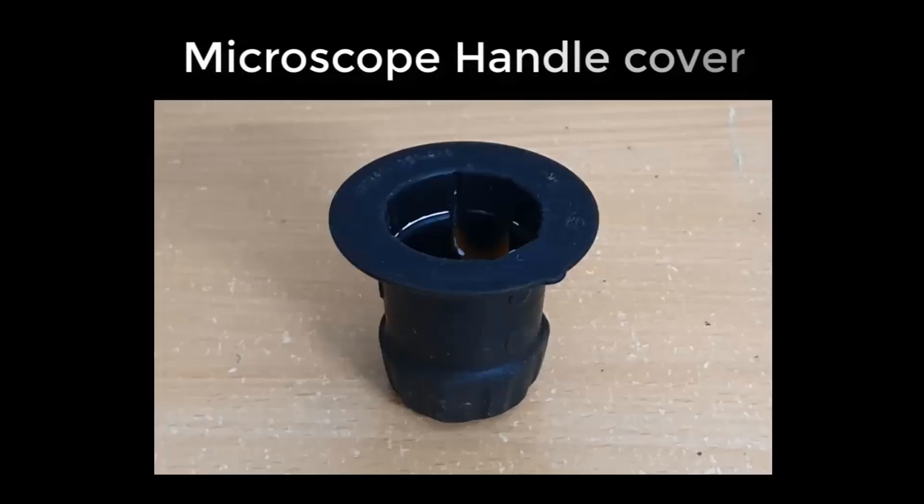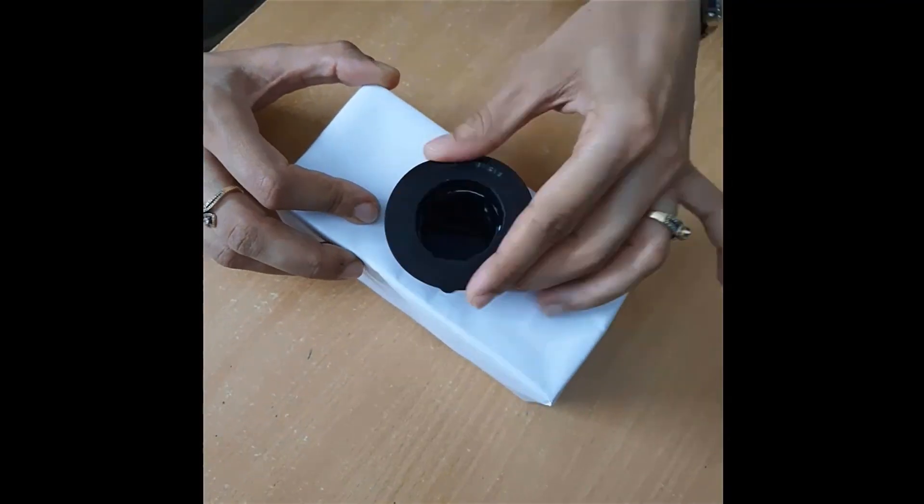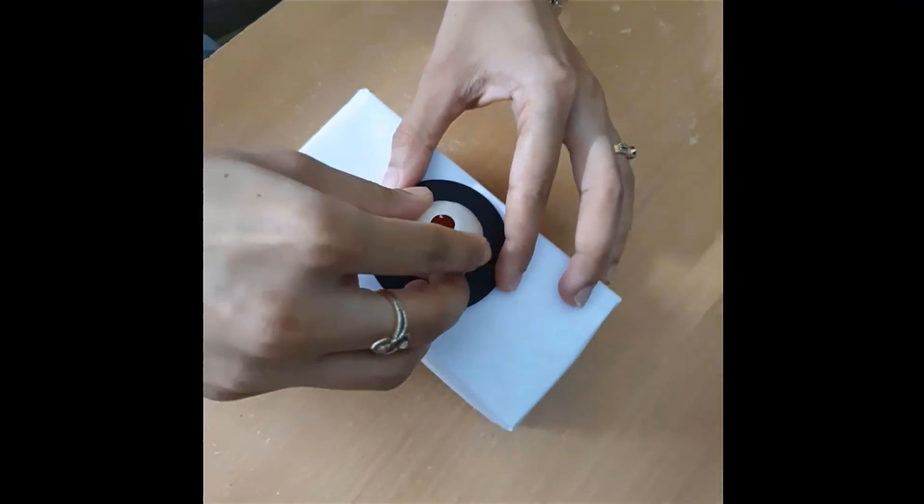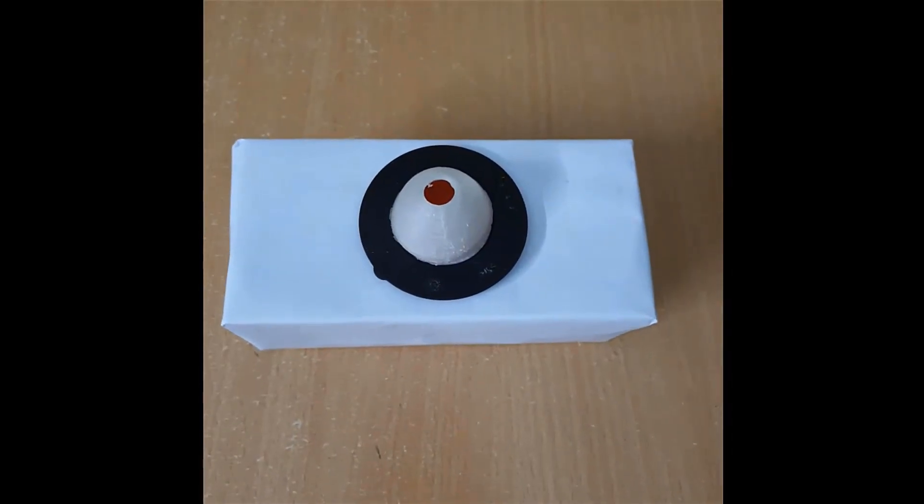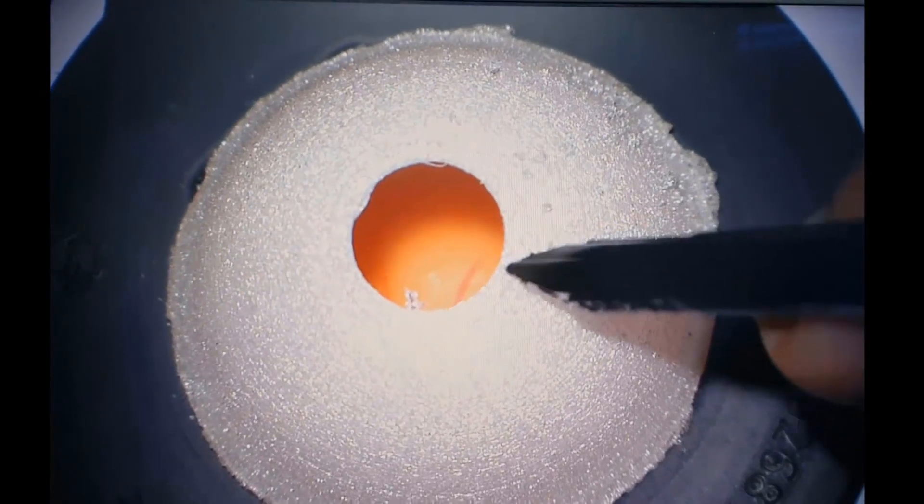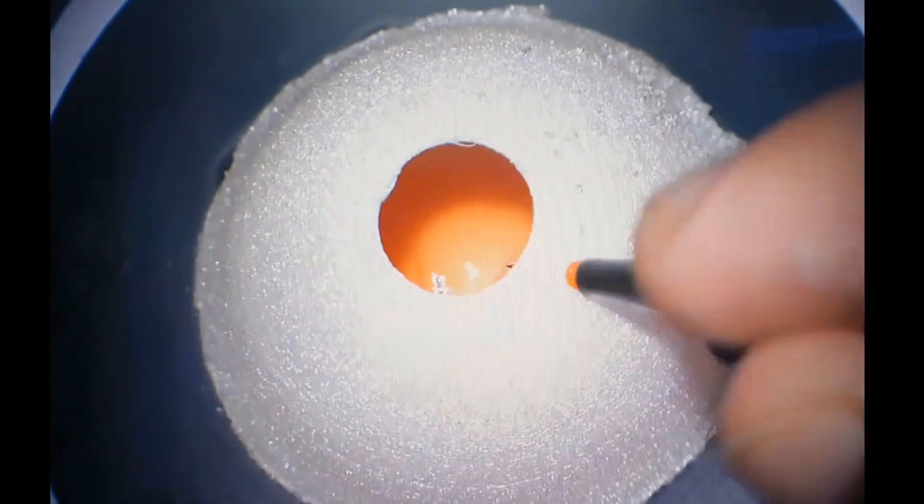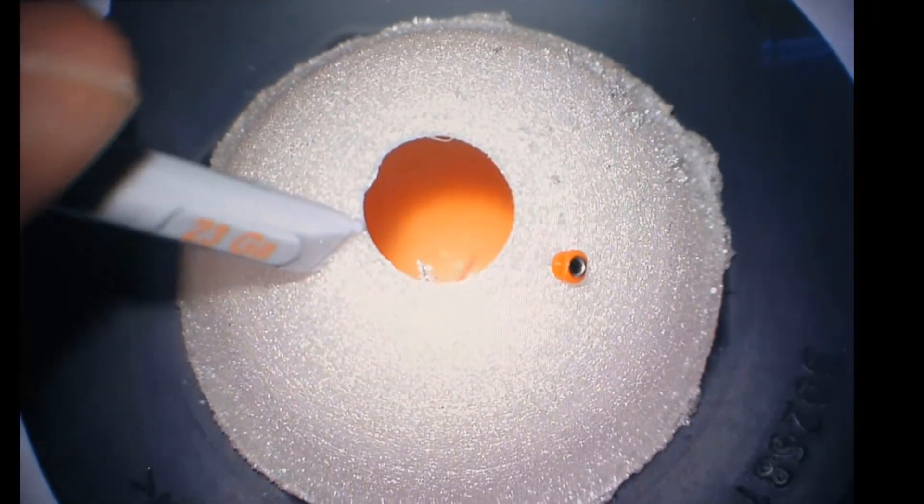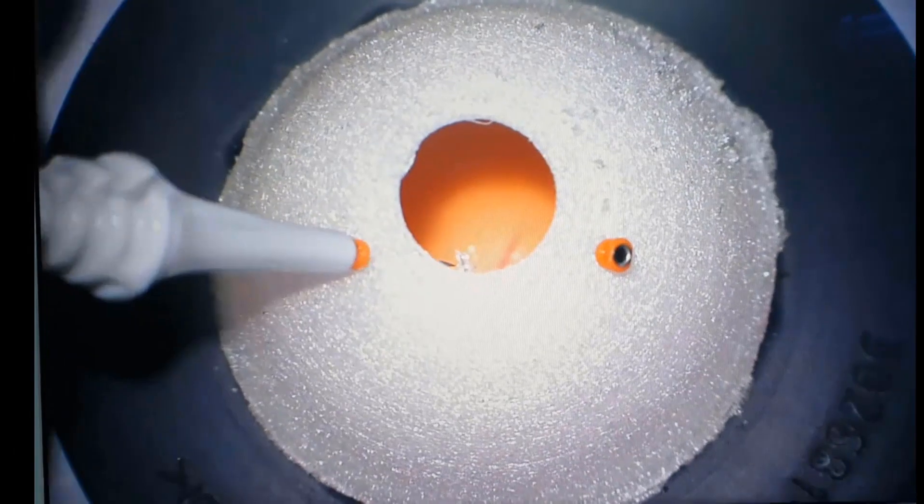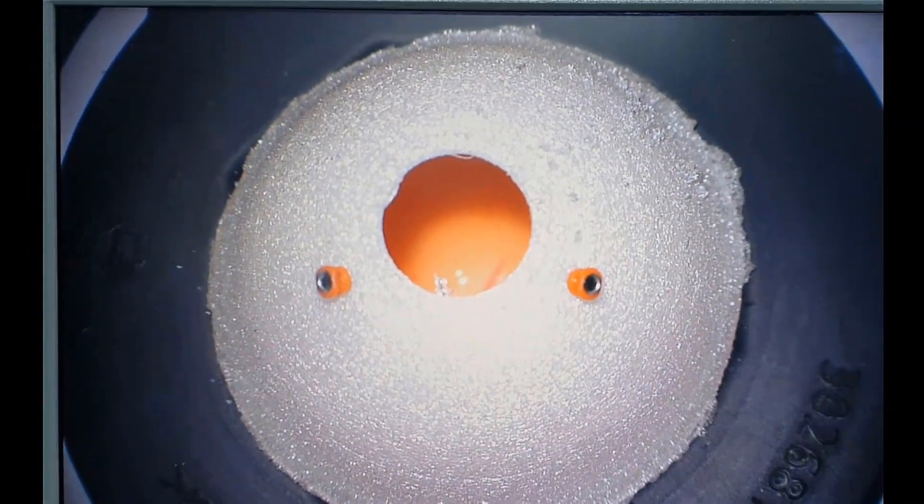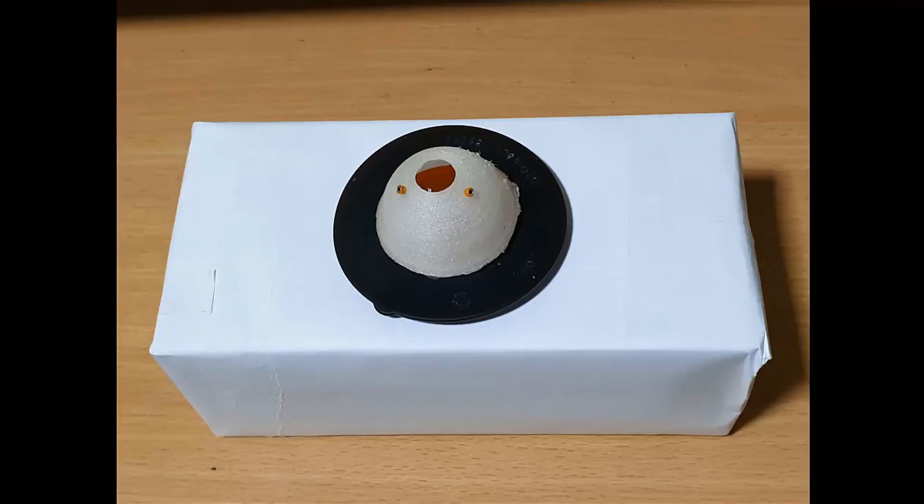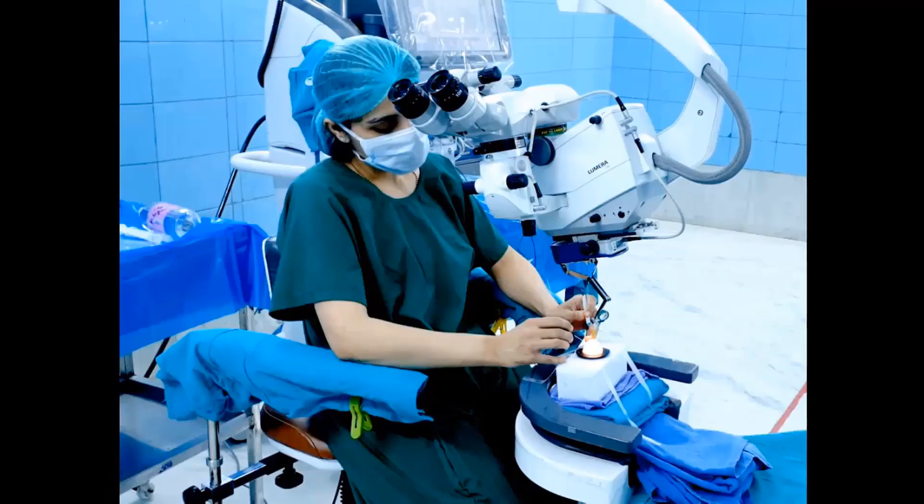A microscope handle cover is fitted into a cardboard box with a hole at the center and the eye model is placed over it. Two ports that simulate sclerotomies can be made in the superior part using a trocar that allow introduction of instruments into the posterior segment. This assembly is then used in conjunction with the operating microscope fitted with the biome to allow stereoscopic view and practice various steps of VR surgery.